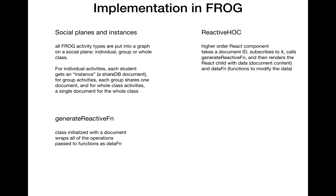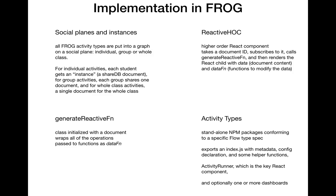Activity types are standalone NPM packages conforming to a specific API — we use Flow types with a type definition for the API. There are two key files they export: index.js, which has metadata and declares the config function, and ActivityRunner, which is the key React component. I'm going to go through all of these in detail with the AC Simple Chat.